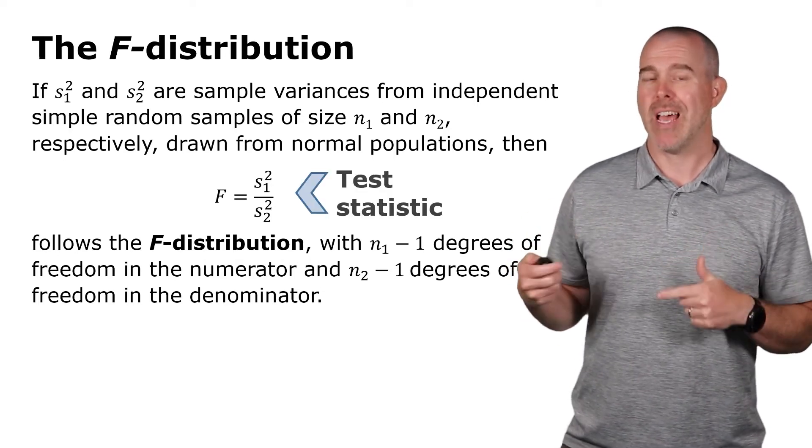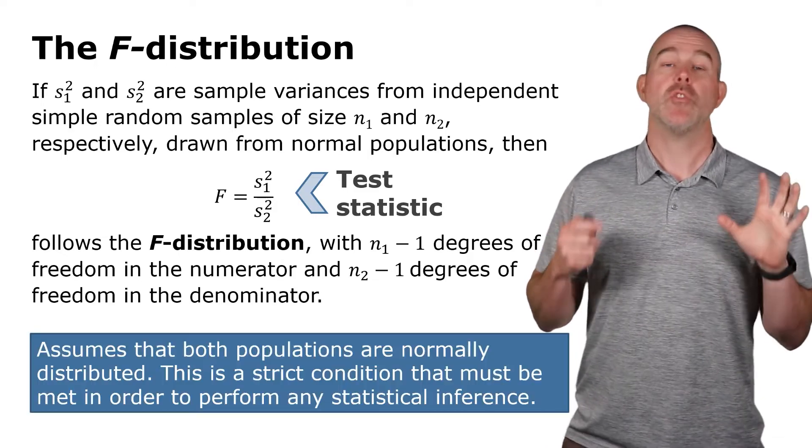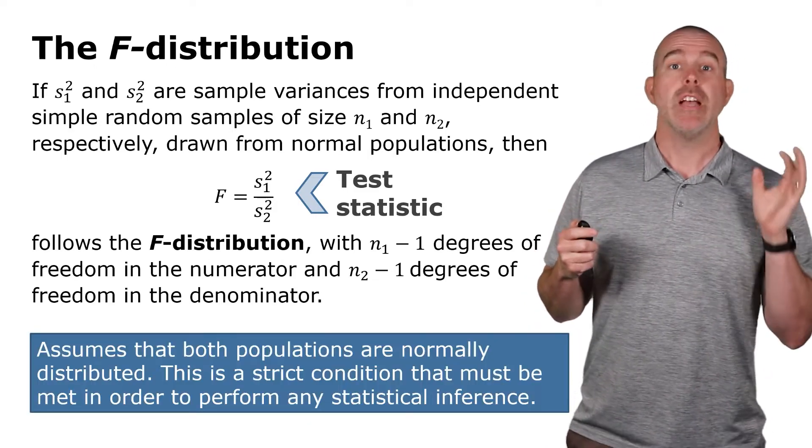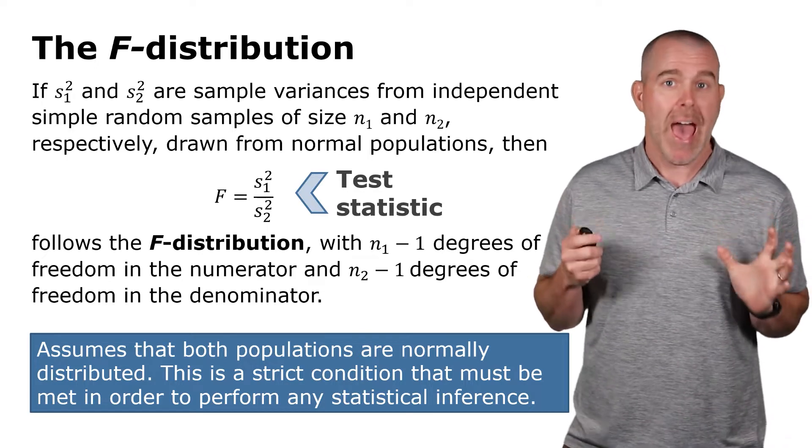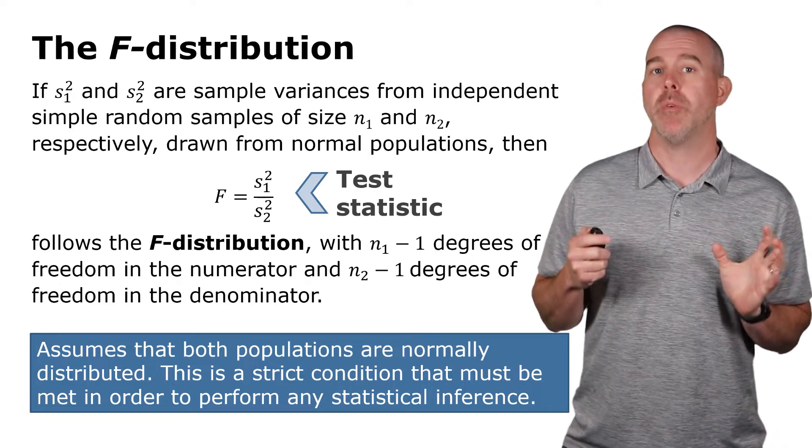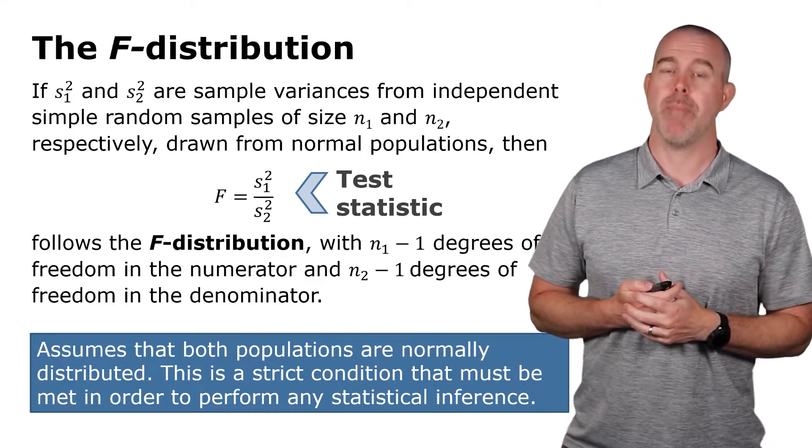So this is going to be our test statistic. Now, this does assume that both populations are normally distributed. It's a pretty strict condition. So they have to look pretty normally distributed in order for you to do this hypothesis test.